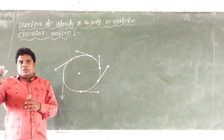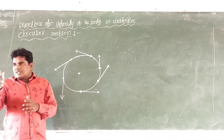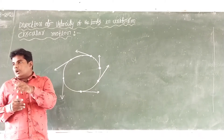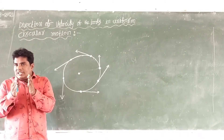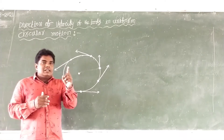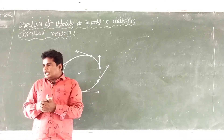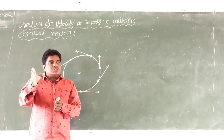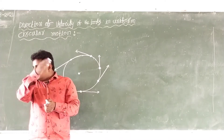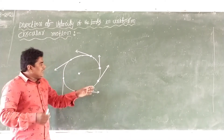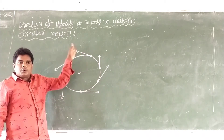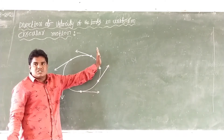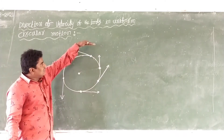The speed depends on the distance. The velocity depends on the direction. The velocity of the stone — the magnitude is fixed, but the direction can be changed. The direction is the same but the direction can be changed. If it is in this direction, the direction changes. The direction is continuously changing.